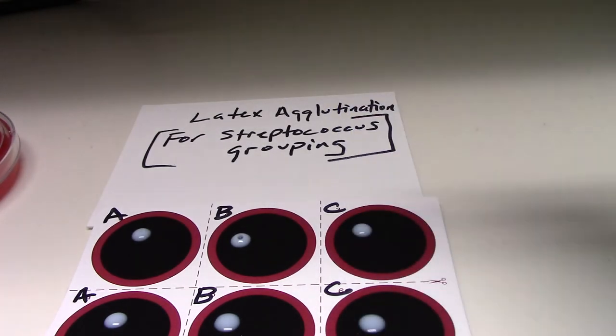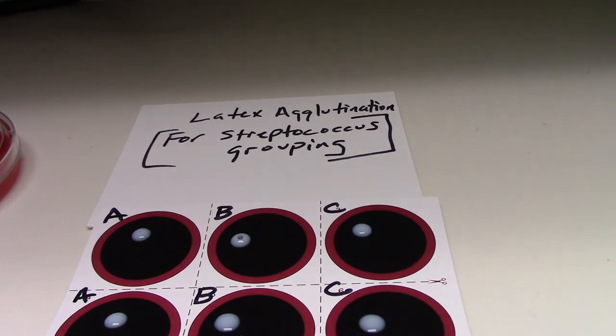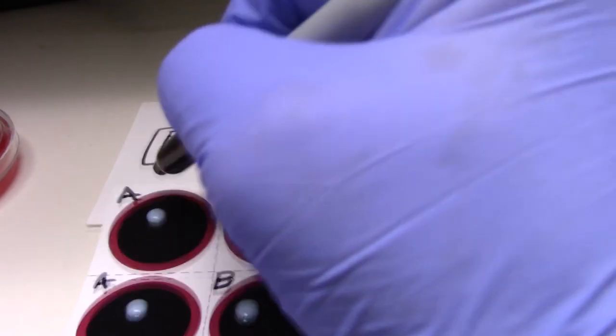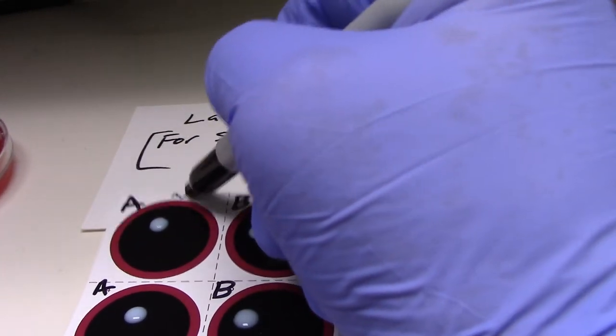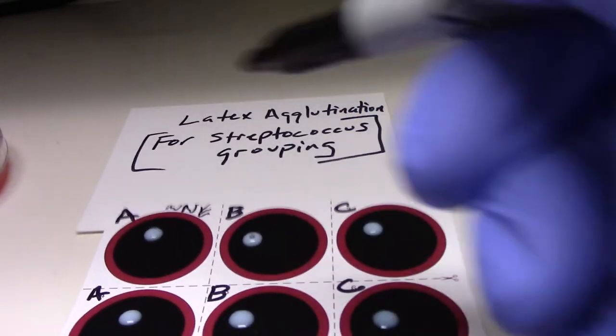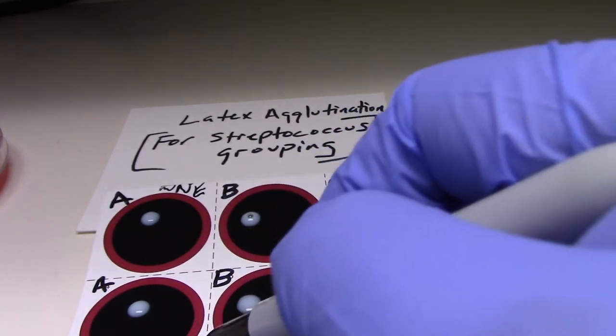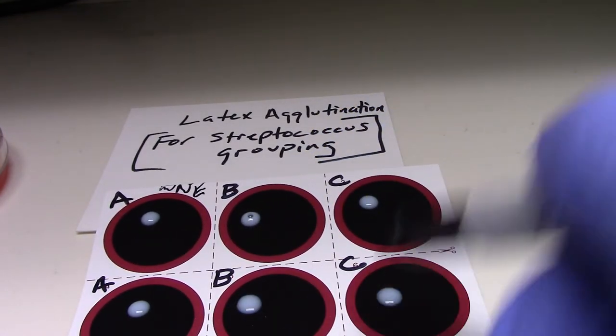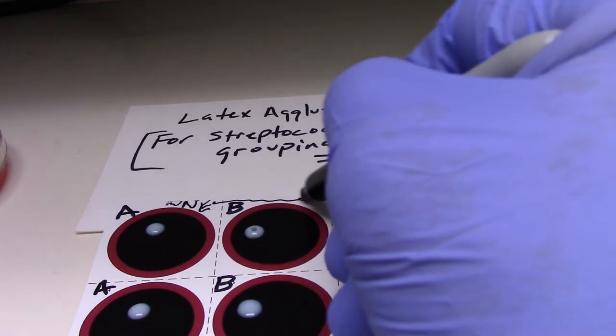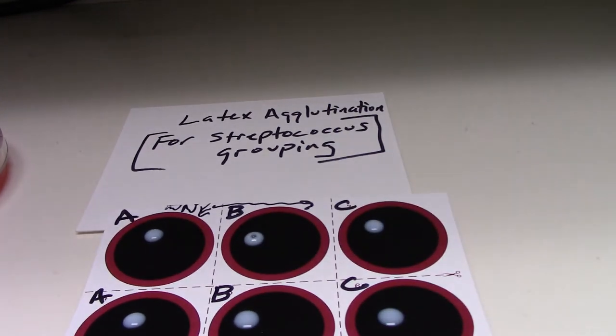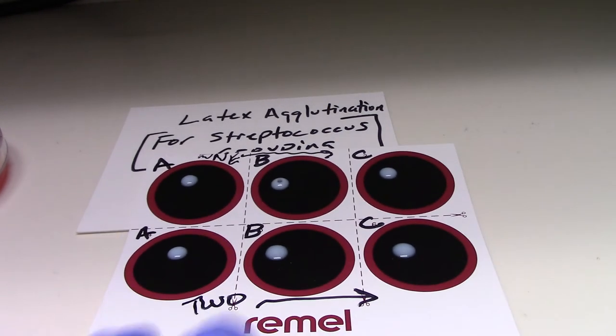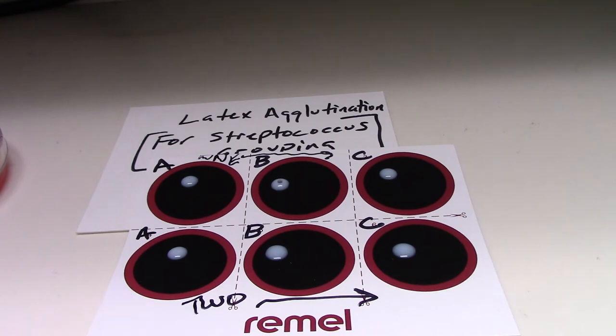So we have two specimens. Specimen 1 will be at the top, and specimen 2 will be across the bottom. And we're testing A, B, and C with number 1, A, B, and C for number 2.